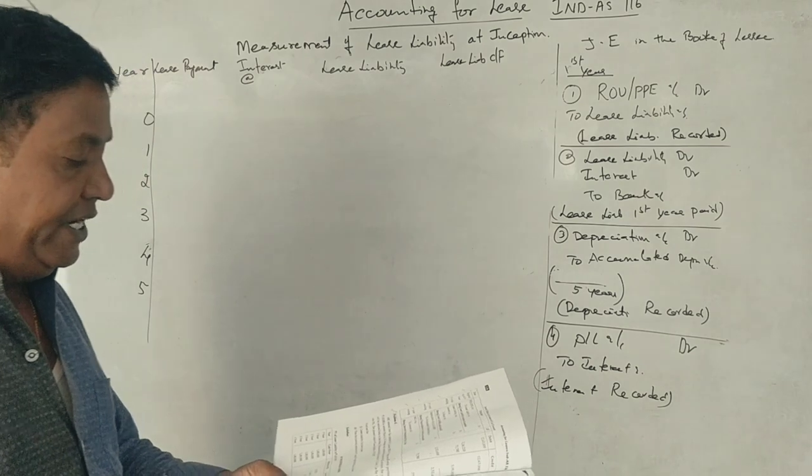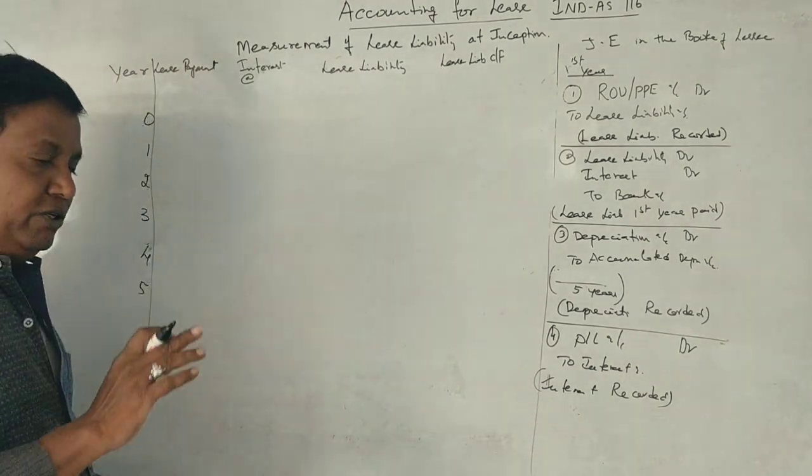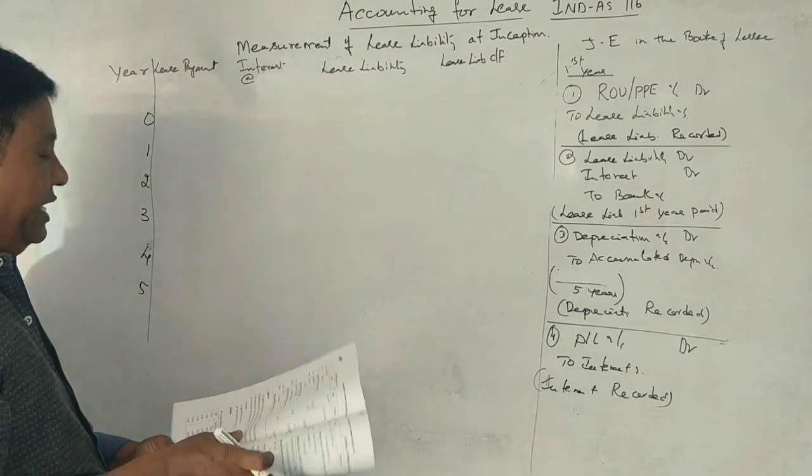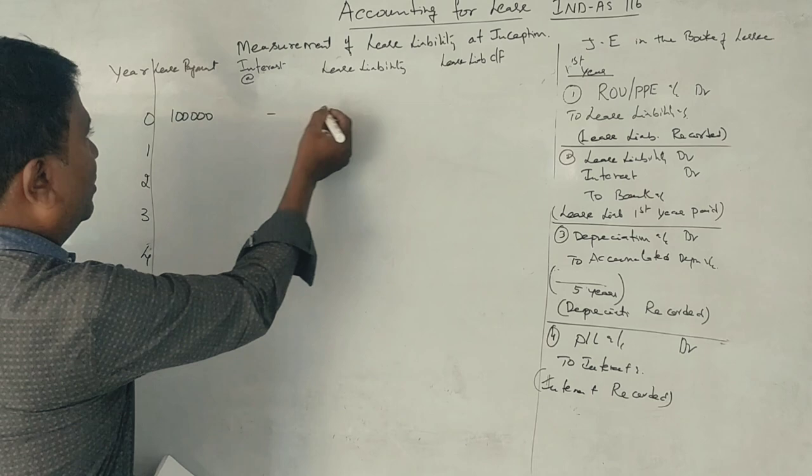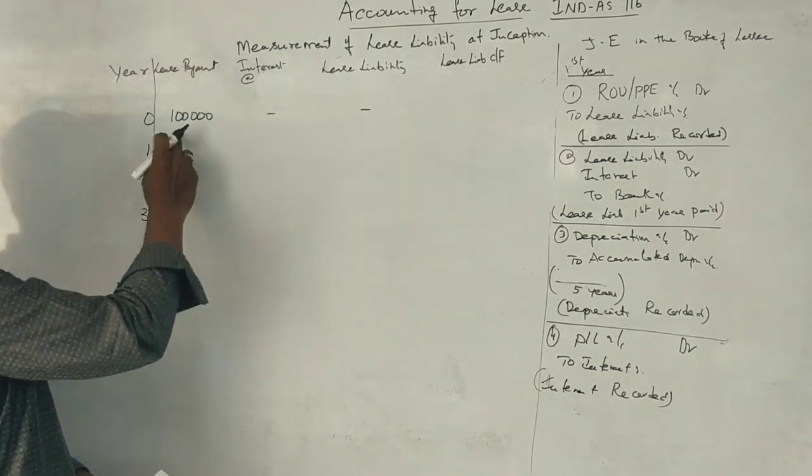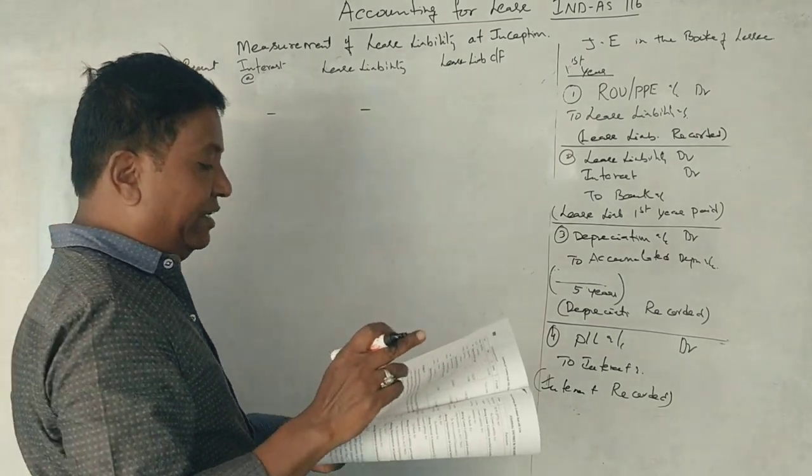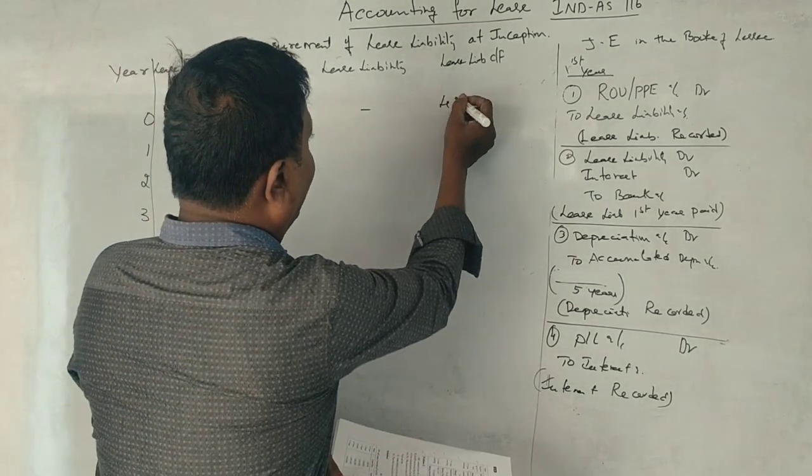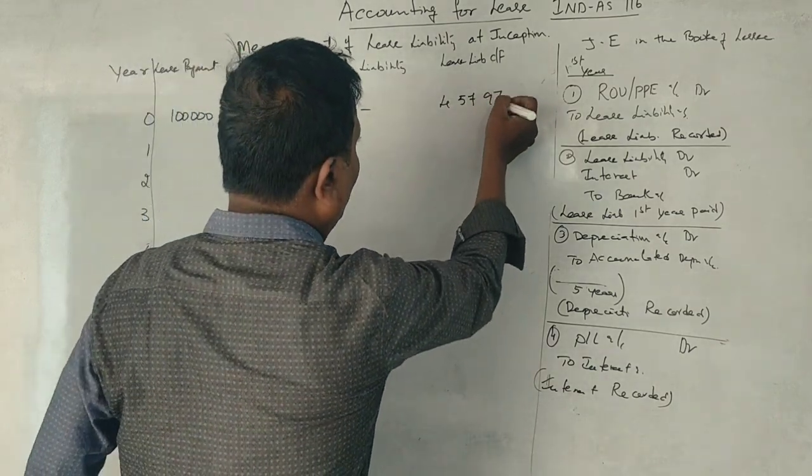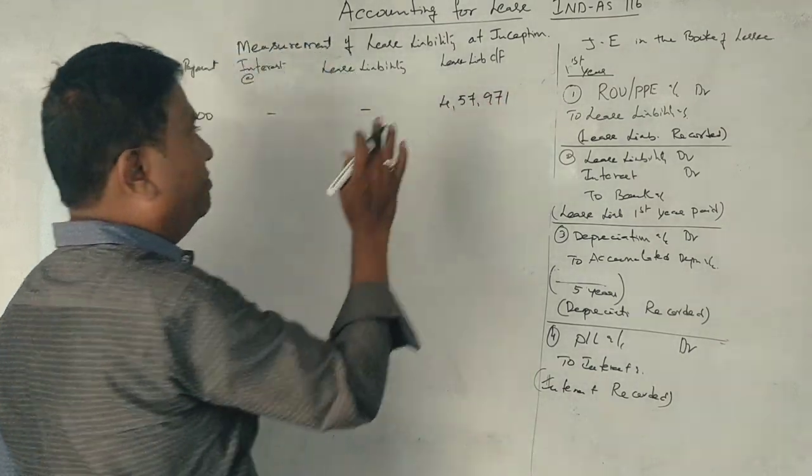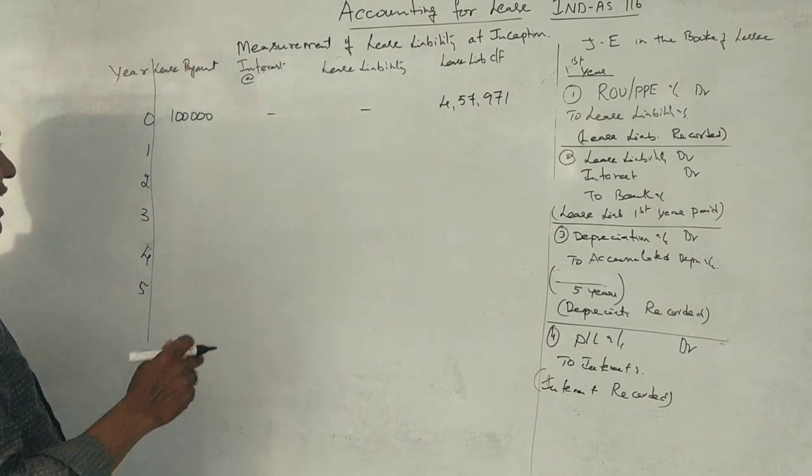This is the end of the year lease payment. The total lease liability is 4,57,971. This means for the 5 years, the present value of the lease on the stock unit. However, at the end of the first year...